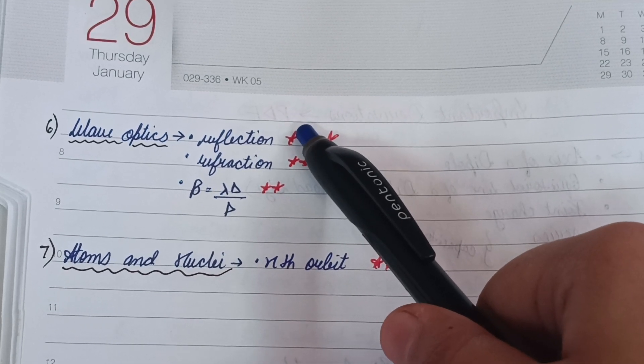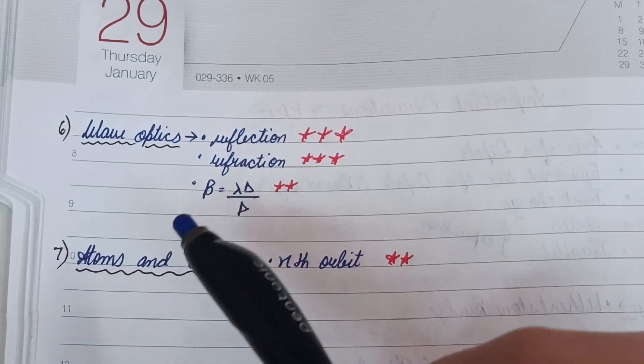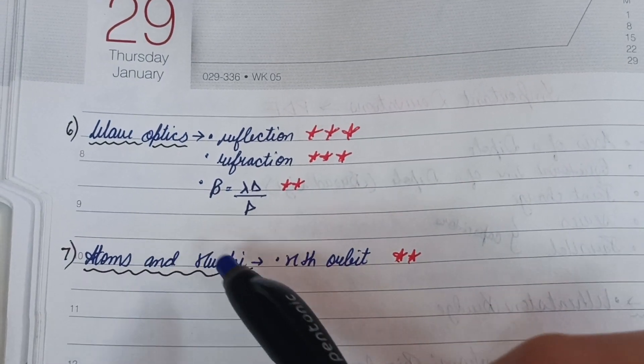In the last, Atoms and Nuclei, the derivation of the nth orbit is the important one.